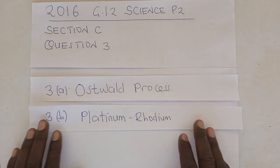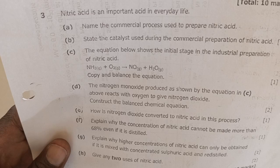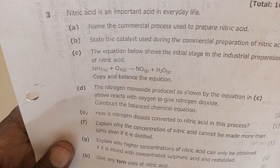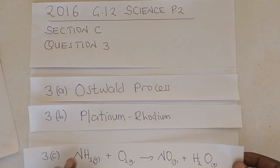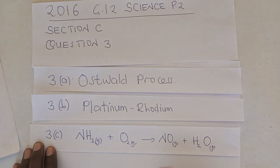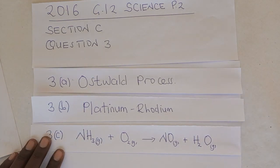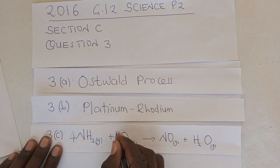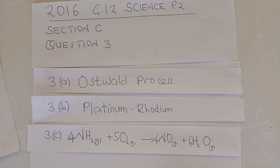We move on forward to question C. Question C says: the equation below shows the initial stage in the industrial preparation of nitric acid. The question now says copy and balance the equation. And that equation says ammonia plus oxygen to give us nitrogen monoxide and water. So here's the question. Remember that in the previous video, we said that this process or this stage is called ammonia oxidation. And in balancing the equation, remember I said that you just say 4NH3 + 5O2 → 4NO + 6H2O. The equation is completely balanced.